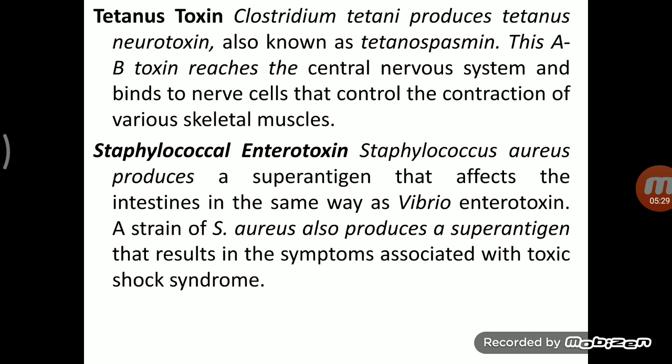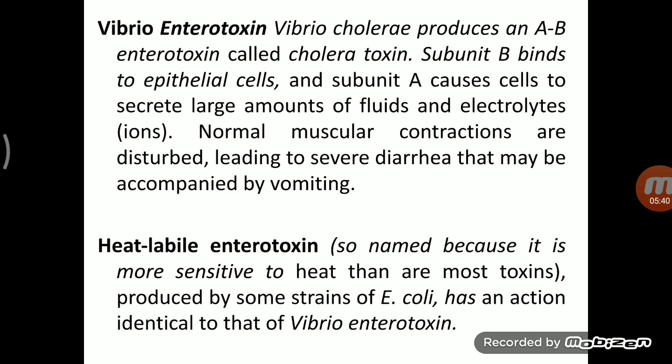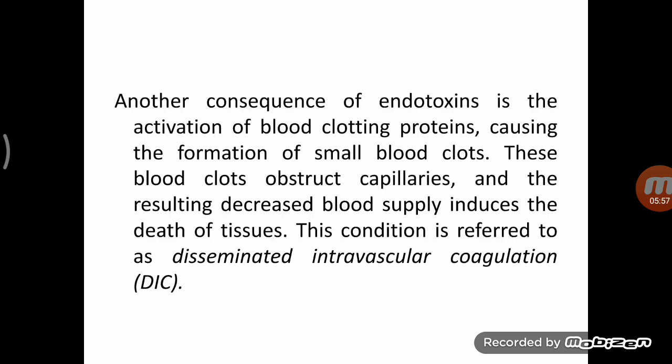Staphylococcal enterotoxin and Vibrio enterotoxin produced by Vibrio cholerae cause cholera disease and can also produce toxic shock syndrome. Another example is heat-labile enterotoxin — as the name suggests, it is an enterotoxin more sensitive to heat, produced by enterotoxigenic E. coli (ETEC), which causes traveler's diarrhea.